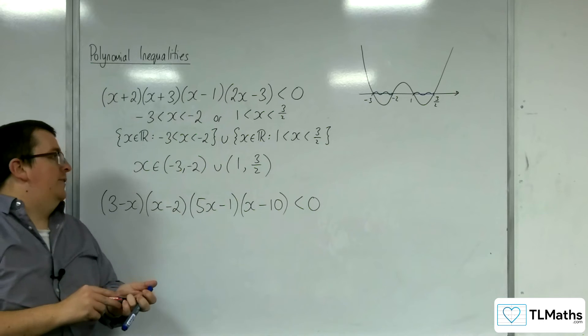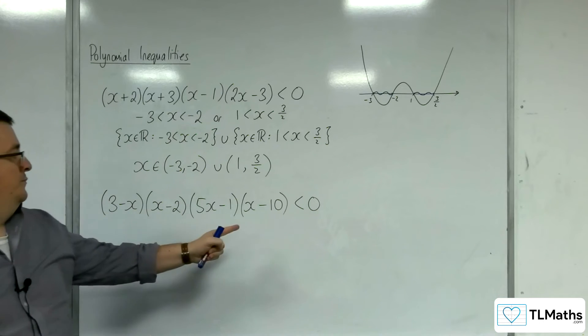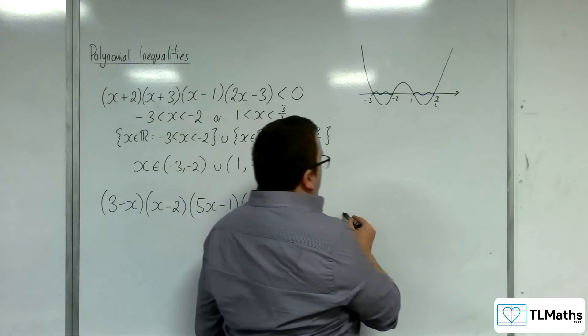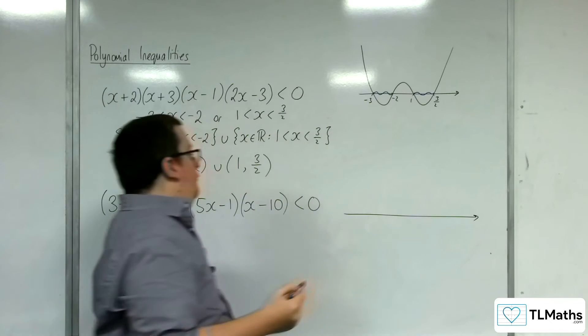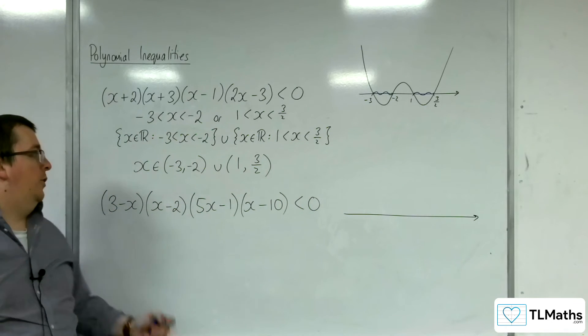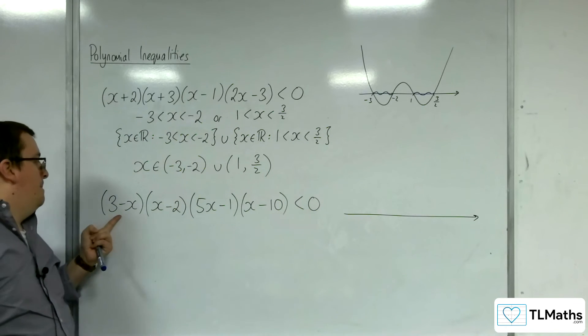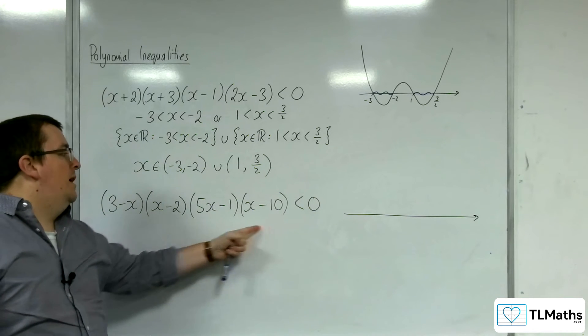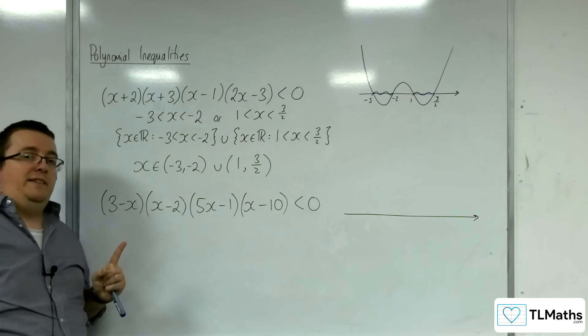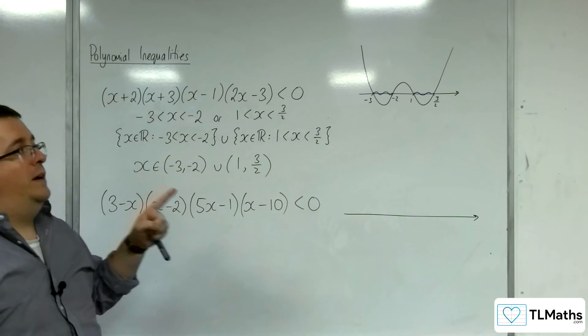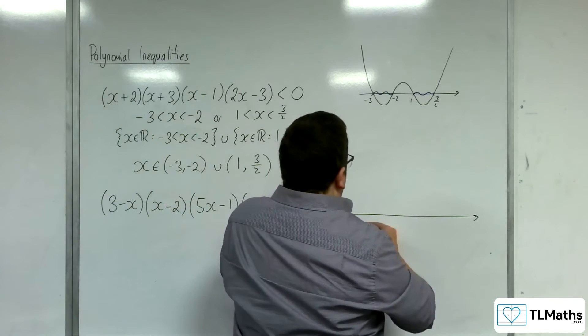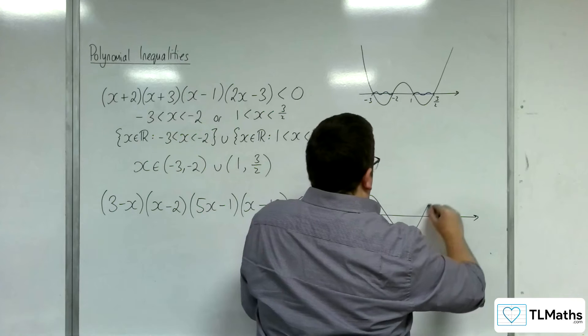Right, so let's take a look at the next example. Once again, this is going to be crossing through the x-axis four times, but because you've got this 3 take-away x, when you multiply it you're going to get a minus x to the 4. That means it now starts in the bottom left and works its way to the bottom right. So it's going to look like this.